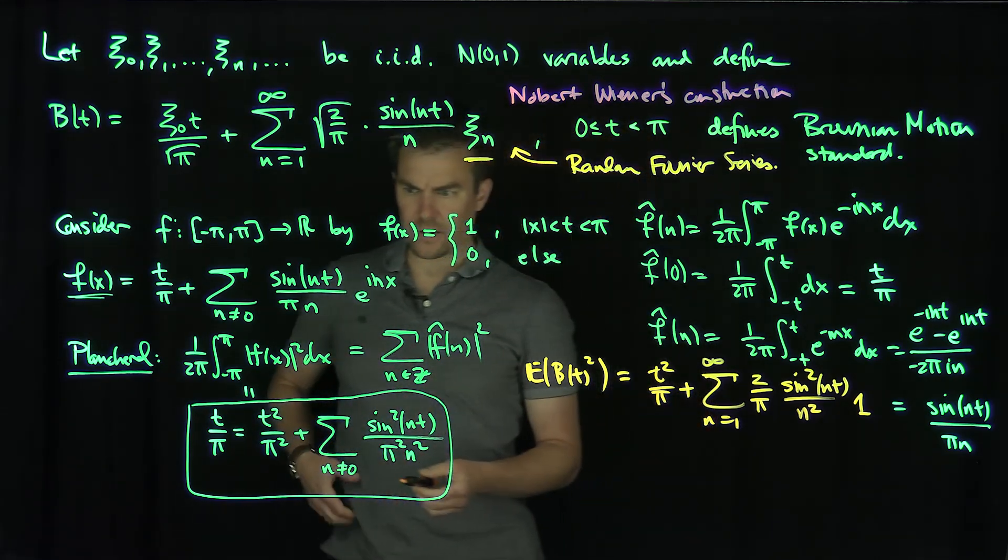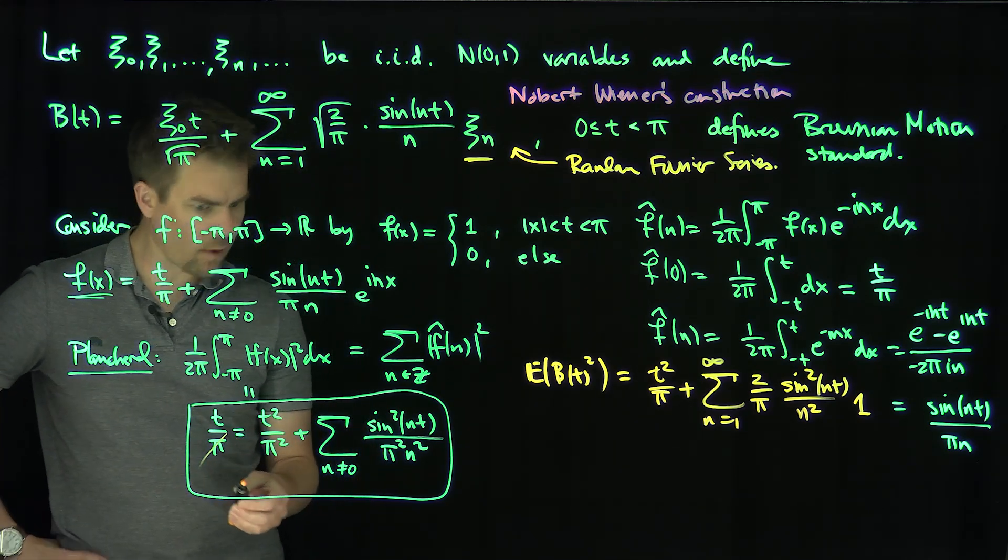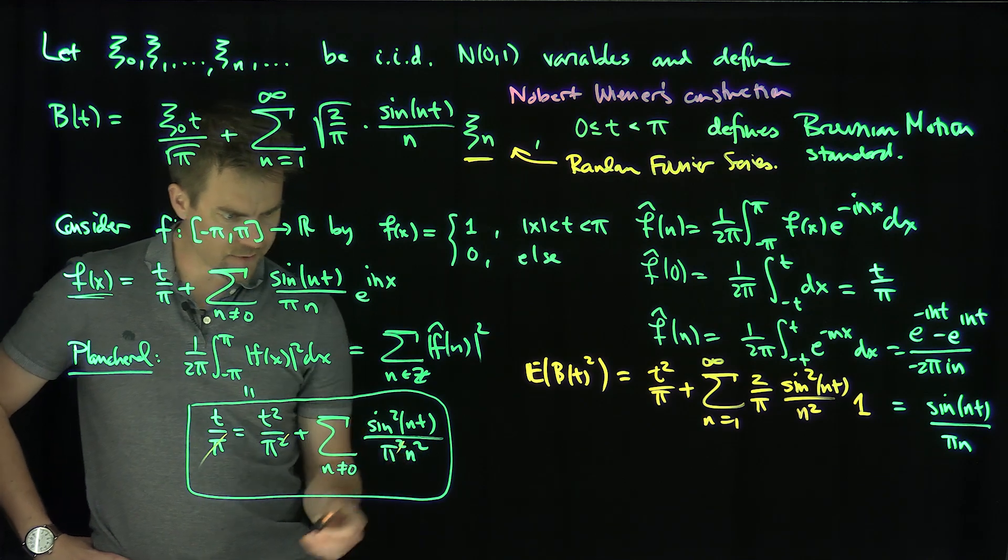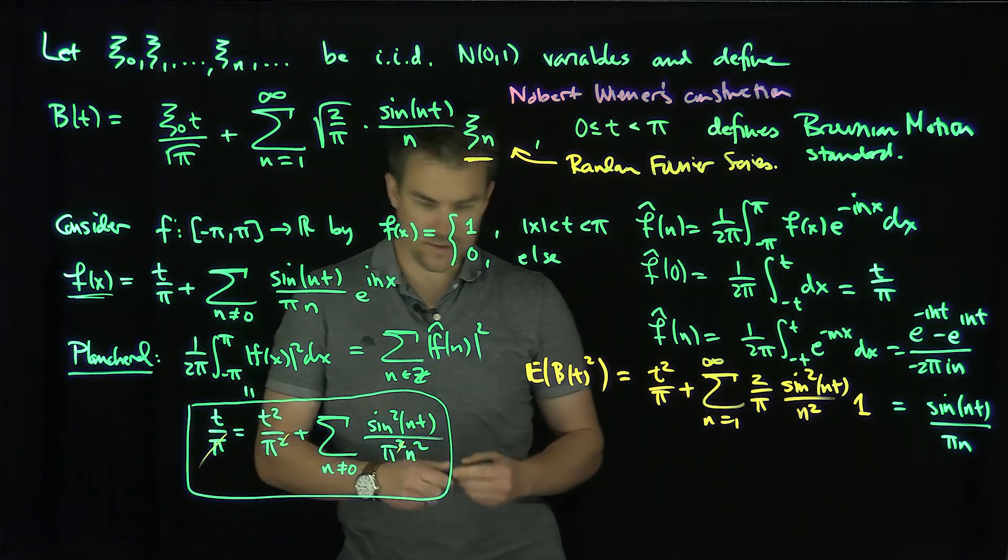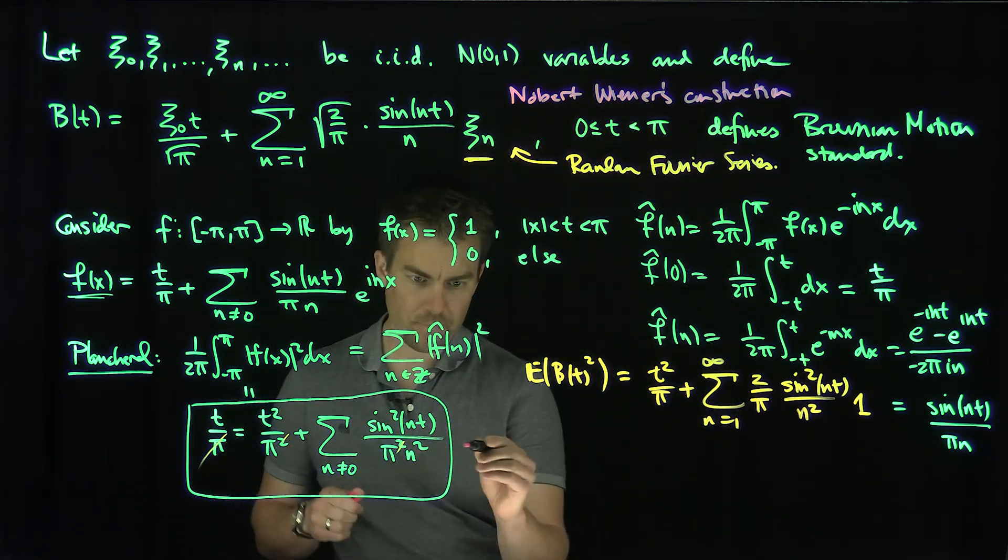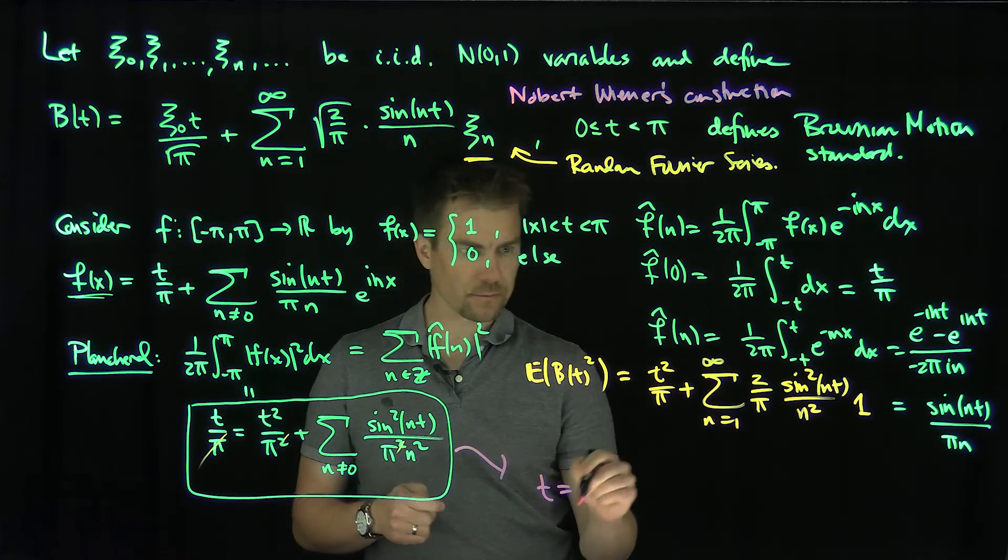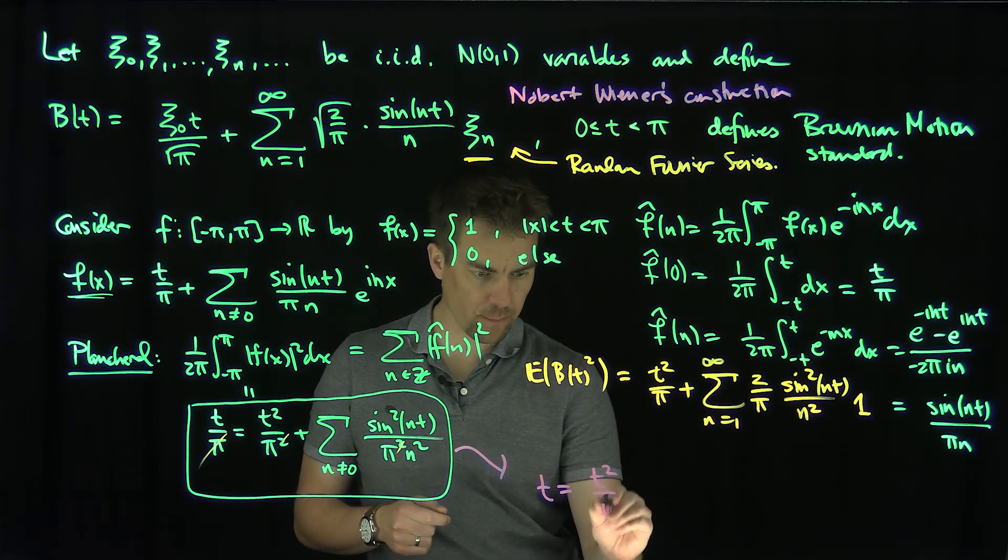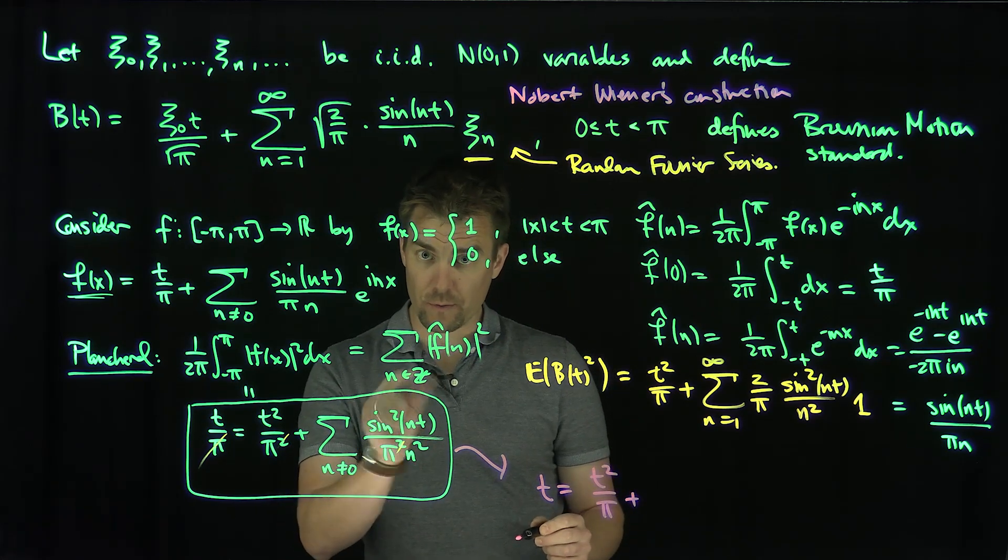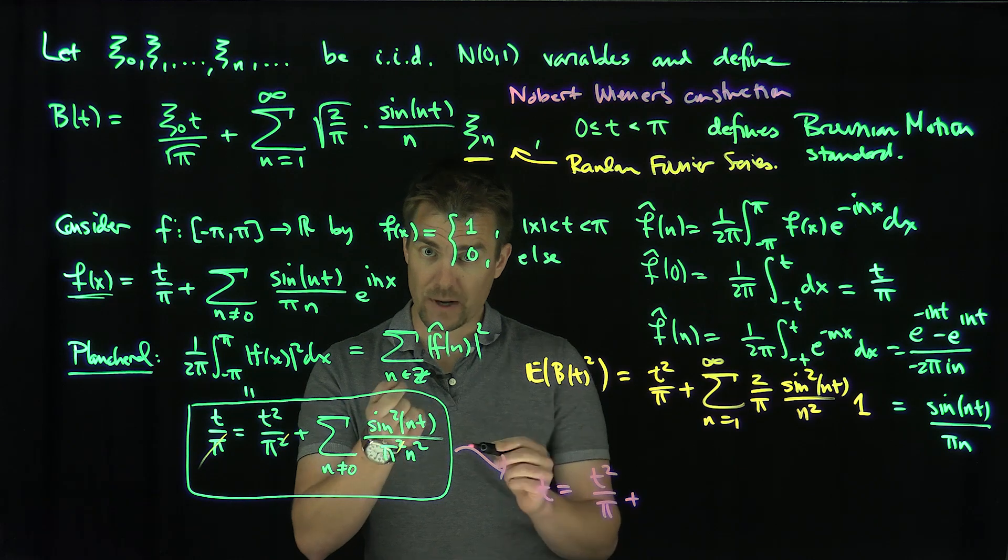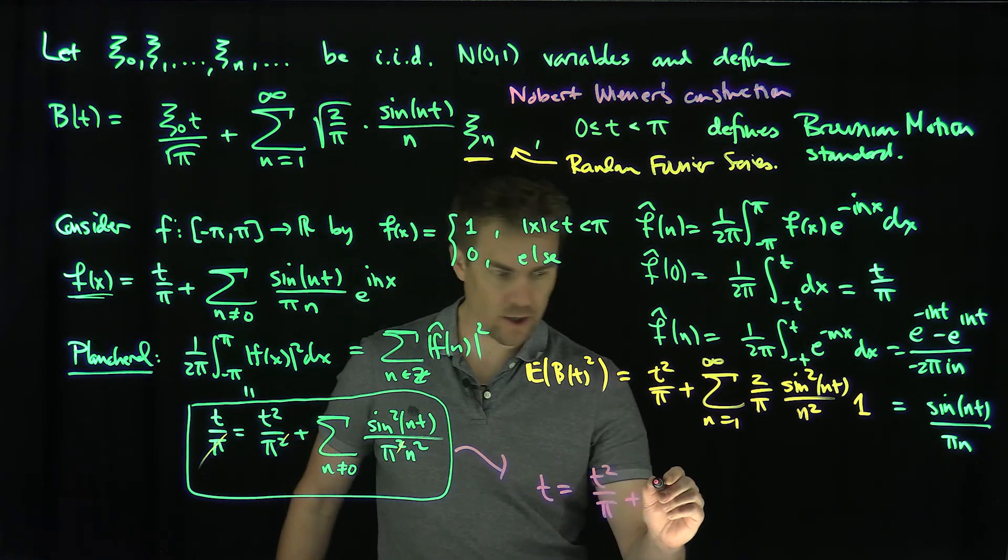But now what can we do? We can observe over here that if I look at this formula over here and cancel out one of the π's, that would cancel and that would cancel, and then use the symmetrization, this identity becomes what? So this identity over here is going to become t is equal to t² over π, plus now, of course, this is a perfectly symmetric function over the negatives and positives, over when n is positive and n is negative, so we get two of these things, so plus two, the sum n goes from one to infinity of sin²(nt) over πn².